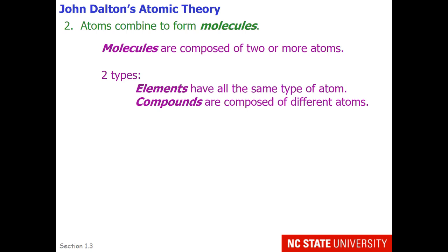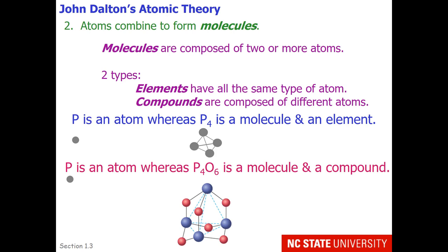Posit two of this theory is that atoms combine to form molecules. Molecules are composed of two or more atoms. Molecules can be subdivided into two types: elements which have the same type of atom, and compounds which are composed of different atoms. So phosphorus alone is an atom, whereas P4 is a molecule and also the element form of phosphorus. But if it's combined with a different type of atom like oxygen to make P4O6, we would call P4O6 a molecule and a compound.